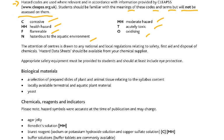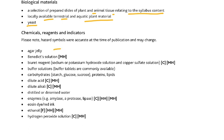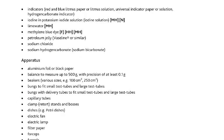Biological materials include selected prepared slices of plant and animal tissue relating to syllabus content, locally available terrestrial and aquatic plant material, and yeast. Chemical reagents you must know include: agar jelly, Benedict's solution, Biuret reagent, buffer solution, buffer tablets, carbohydrates such as starch, glucose and sucrose, dilute acid, dilute alkali, distilled or deionized water, enzymes, eosin dye or red ink, ethanol, hydrogen peroxide. Indicators include: red and blue litmus paper or litmus solution, iodine and potassium iodide solution, lime water, methylene blue, petroleum jelly, sodium chloride, and sodium hydrogen carbonate.